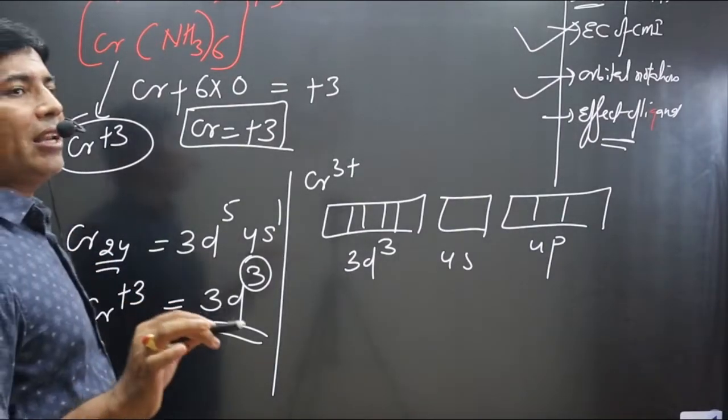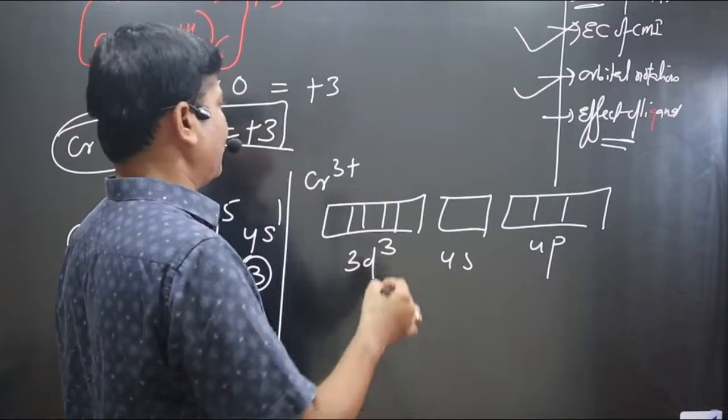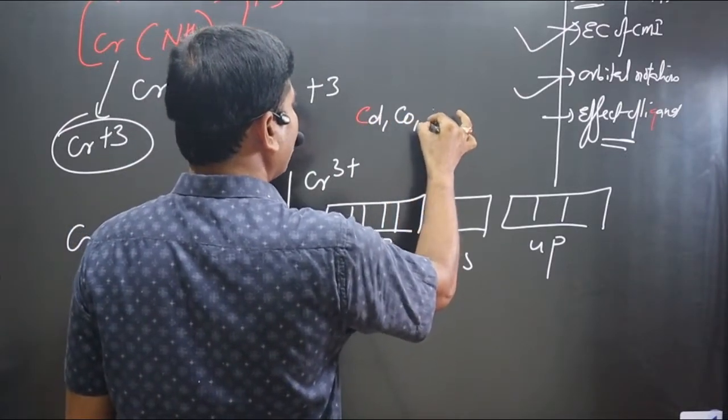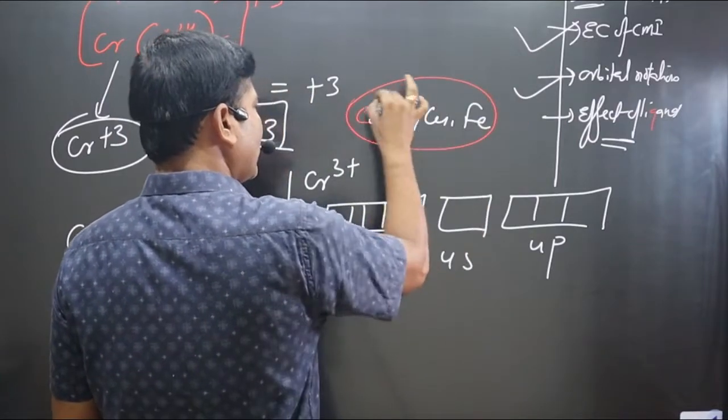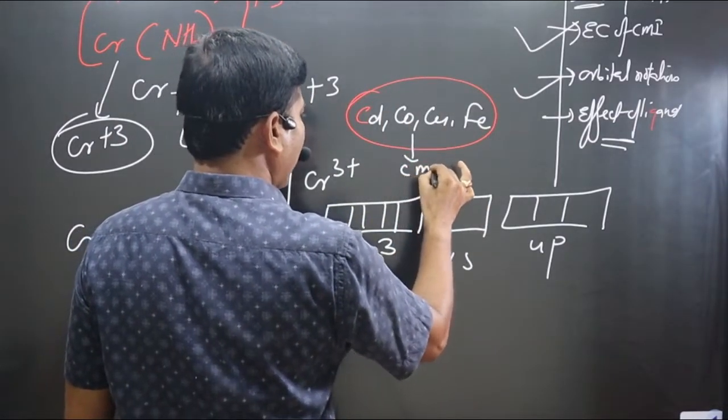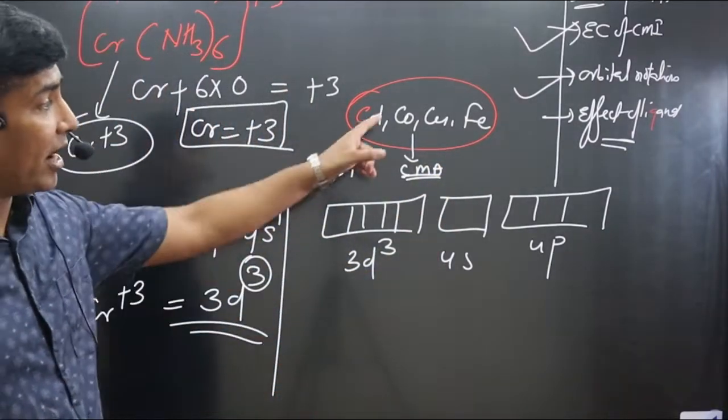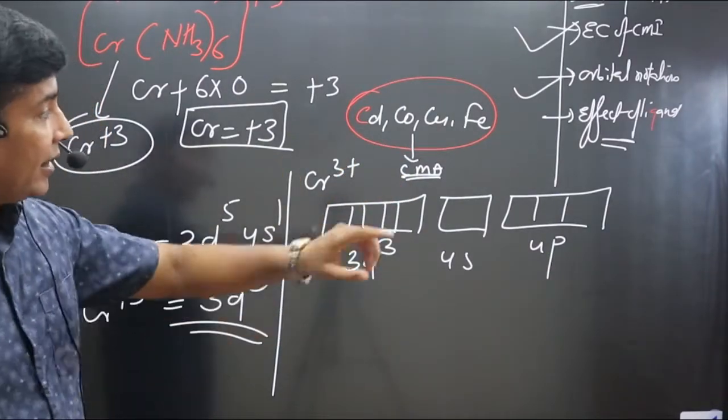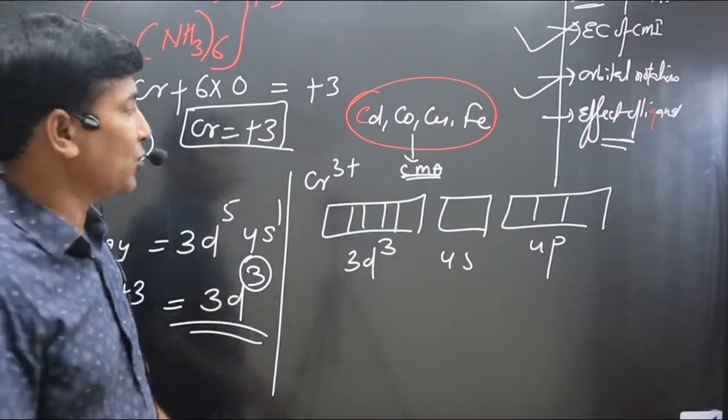Pay attention very carefully. If ammonia molecule, this neutral ligand, is attached to cadmium, cobalt, copper, or iron, with these central metal atoms, if neutral ligand ammonia is attached to any of these central metal atoms, it acts as strong field ligand.